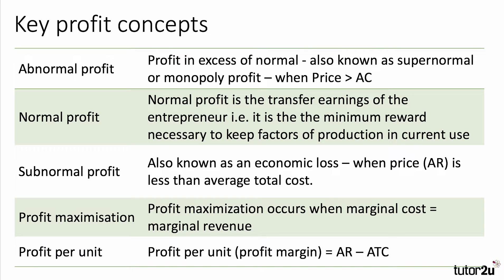Normal profit is also known as the transfer earnings of the entrepreneur. It's essentially the minimum rate of return that a business needs to make in order to stay in its current line of business — to keep factors of production in their current use. The convention is that we include normal profit in the average cost of the business.